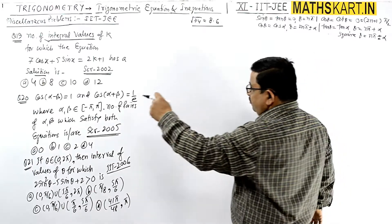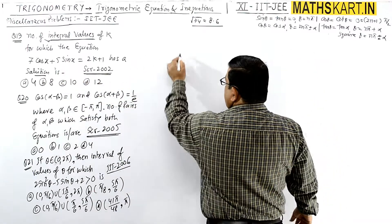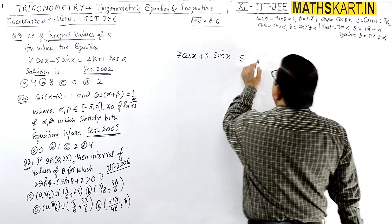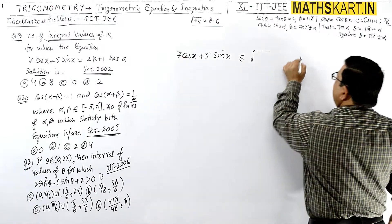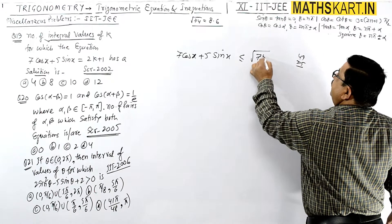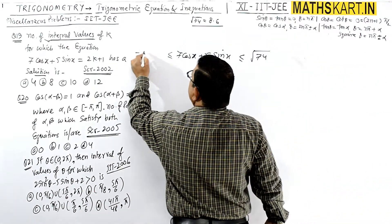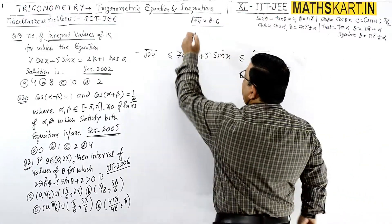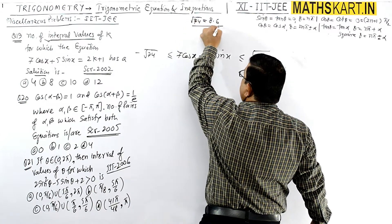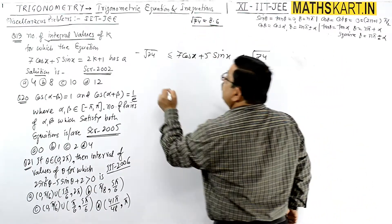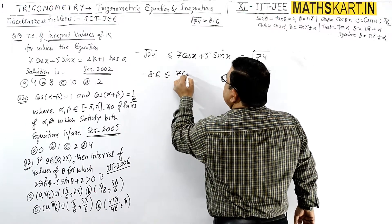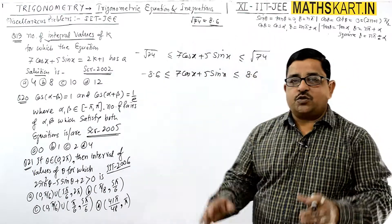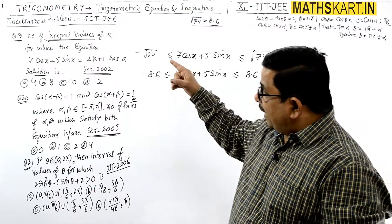So first let's write the value which is 7cos(x) + 5sin(x). This value will lie between minus root(49+25) and root(49+25), that is root(74). Root 74 is approximately 8.6, so 7cos(x) + 5sin(x) lies between minus 8.6 to 8.6.